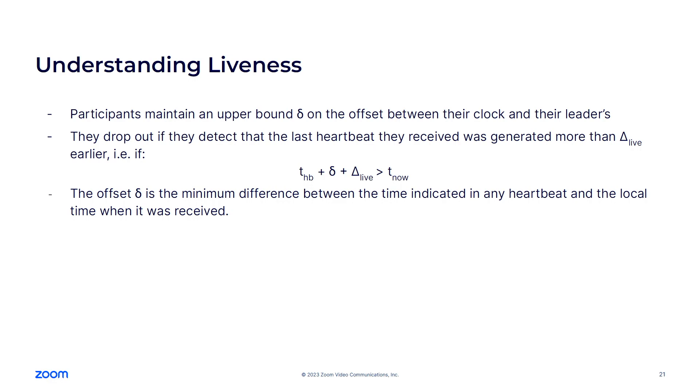And obviously participants need to only start using a key after the corresponding participant list and the heartbeat have been received. Let's see how receiving these signed heartbeats can actually help enforce liveness. So what participants do is that they maintain an upper bound delta on the offset between their clock and their leader's clock. And now they can drop out of the meeting if they detect that, according to their estimate, the last heartbeat that they received from the leader was generated too long ago. And by too long ago, I mean by this, there is this constant of the protocol that we call delta live that describes this offset. So THP in this equation is the timestamp that is included in the heartbeat.